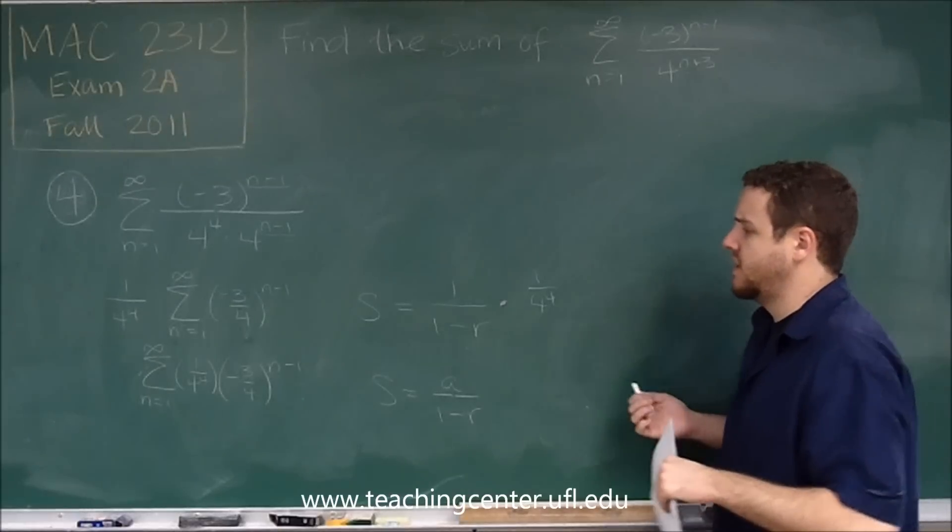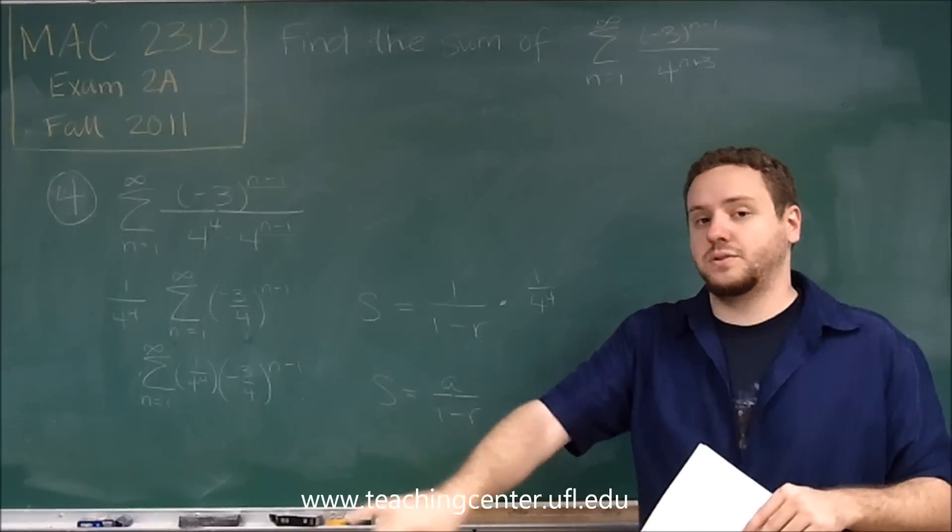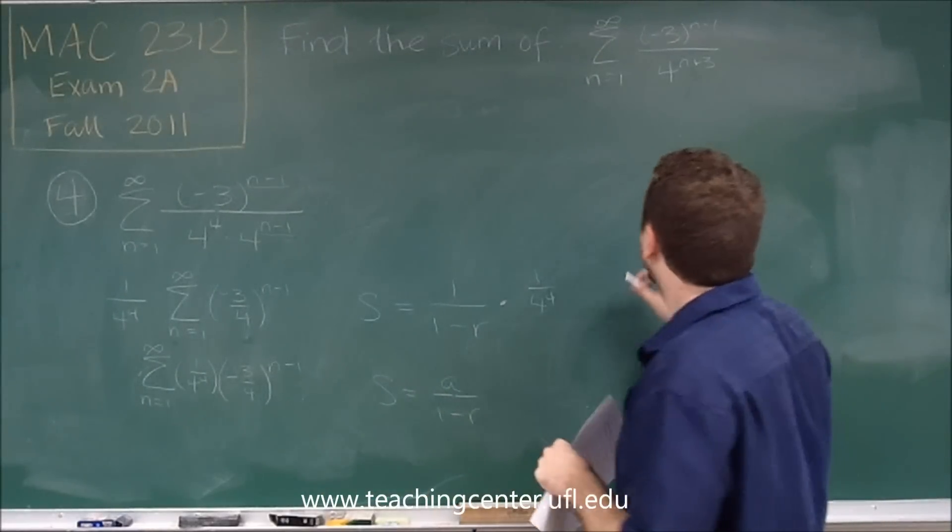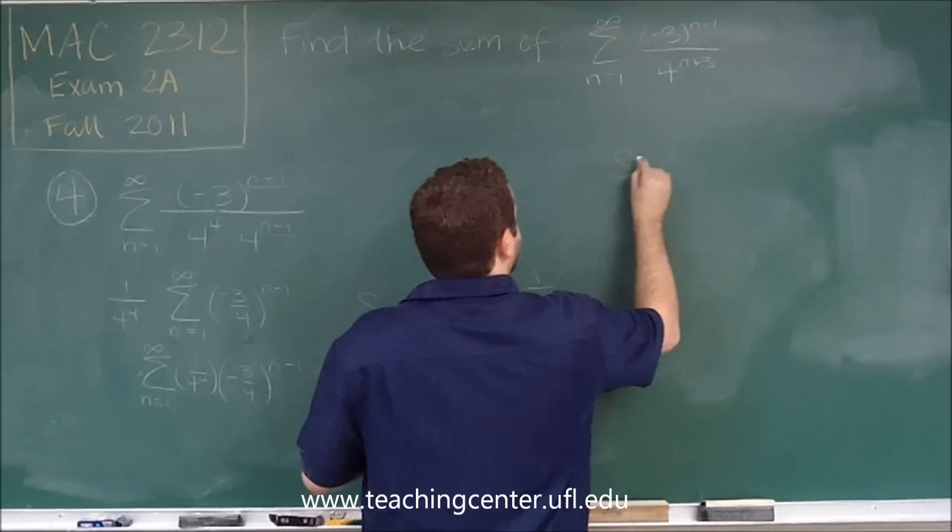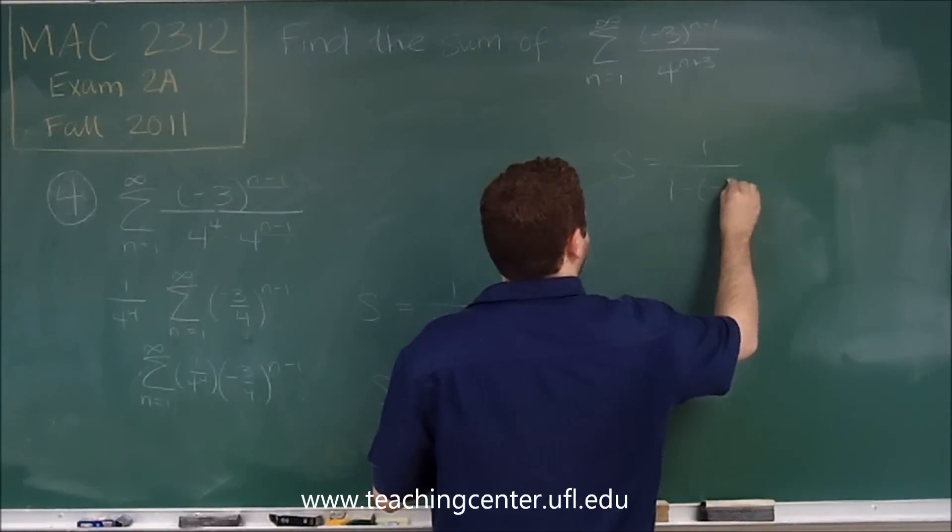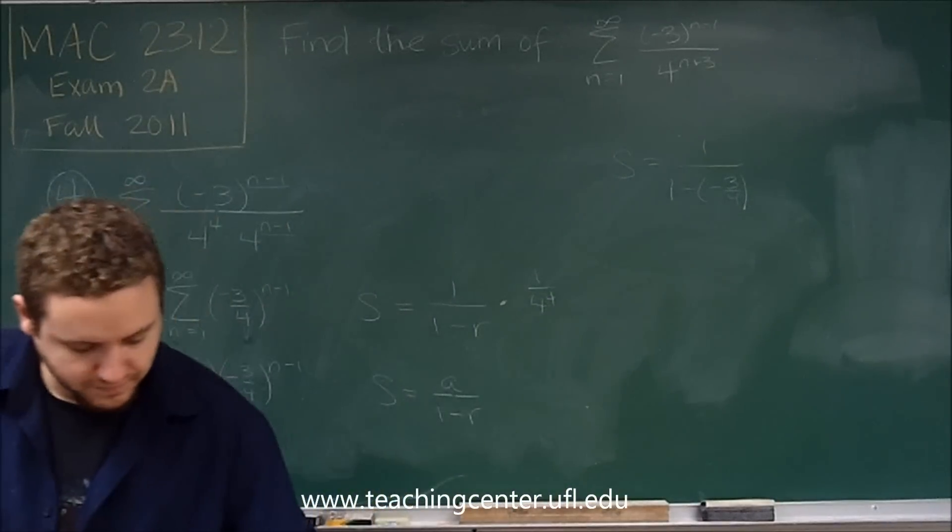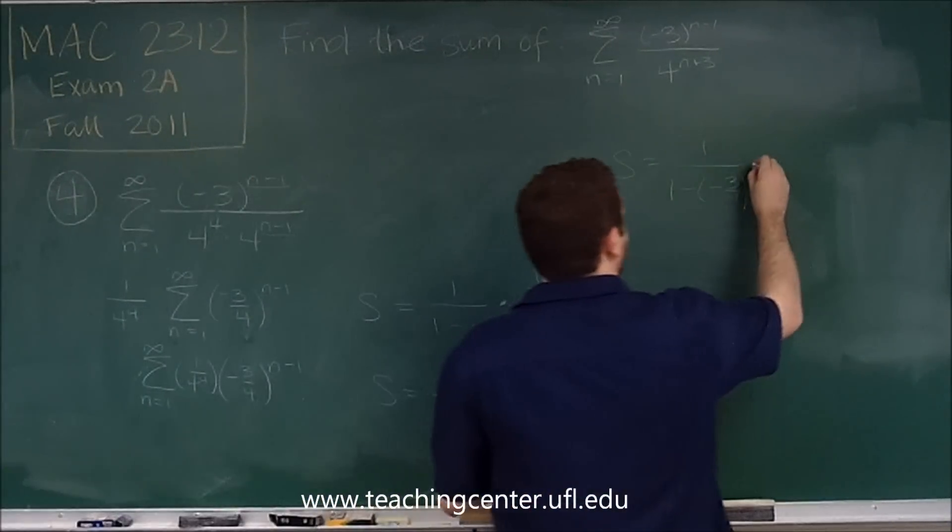In any case, let's figure out what this is. So r is negative three-fourths, make sure that you realize that's negative, because that is important here. So we get the sum is equal to one over one minus negative three-fourths times one over four to the four.